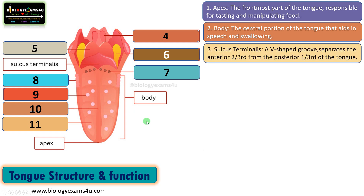The third part is called the sulcus terminalis. It is a V-shaped groove that separates the anterior two-thirds from the posterior one-third of the tongue.